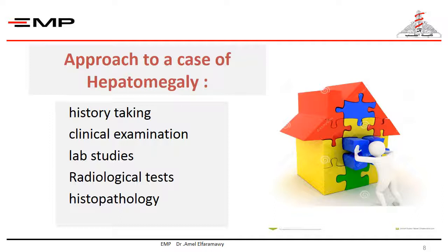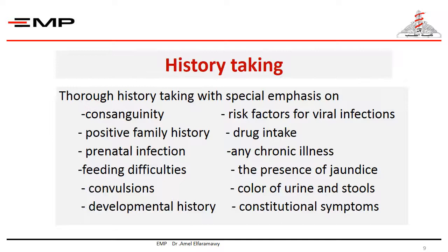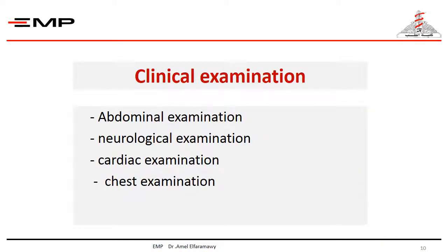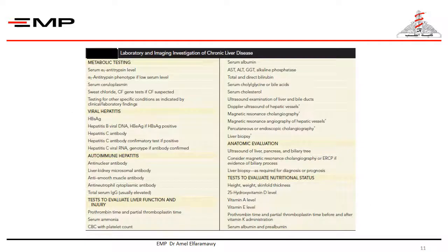The cornerstones of assessment of a case of hepatomegaly, as well as every other medical case, are history taking, clinical examination, lab studies, radiological tests, and histopathology. Clinical examination should include, in addition to abdominal examination, neurological examination and cardiac and chest examination. Laboratory studies include specific tests for diagnosing the underlying illness and tests to monitor patient status. This table summarizes the laboratory and imaging investigations for chronic liver disease.